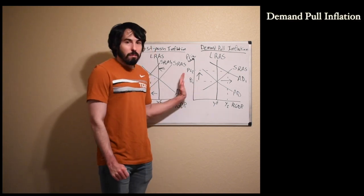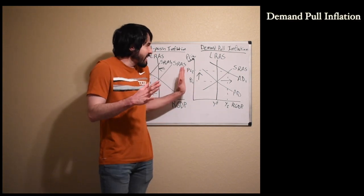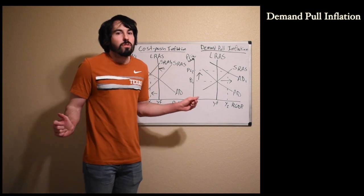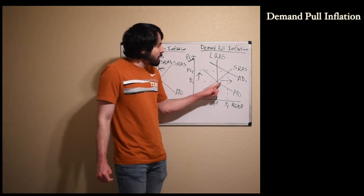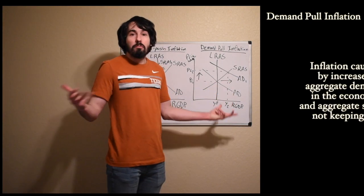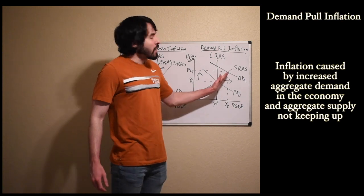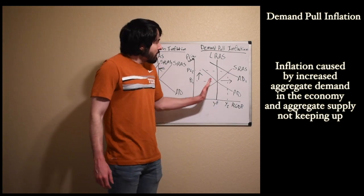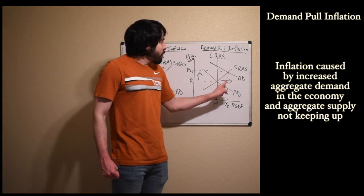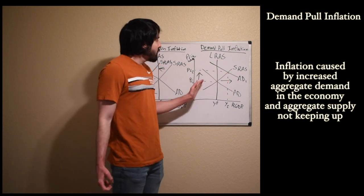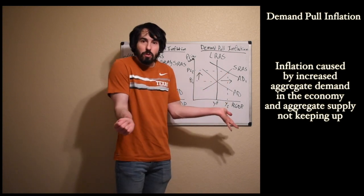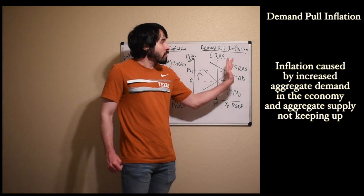First, let's talk about demand pull inflation. Demand pull inflation isn't exactly the end of the world. What happens here is aggregate demand increases - we start buying more of everything. As we start buying more of everything, prices go up. As aggregate demand shifts to the right, price level increases and we're experiencing some inflation.